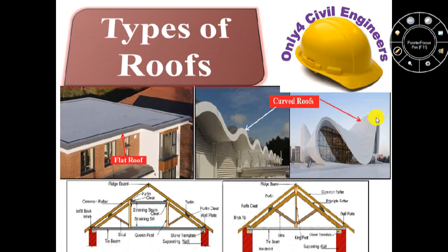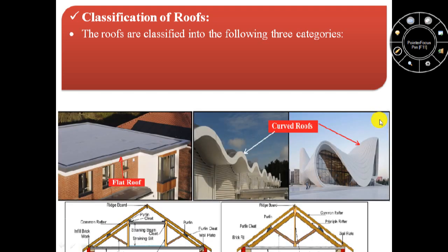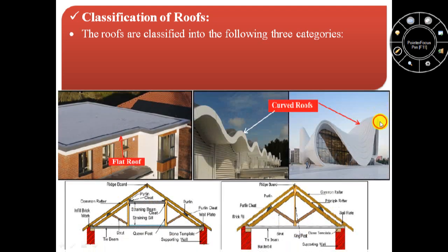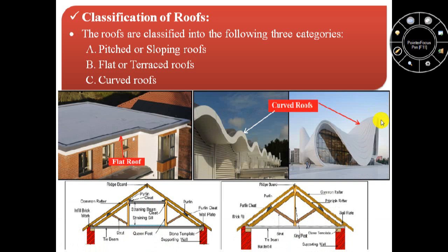Hello friends, thanks for clicking and welcome to my channel only for civil engineers. In this video we will discuss about types of roofs. If you want an ebook related to the subject building construction and materials with pictorial format like this presentation, then the link is given in the description box. So firstly we will see different types of roofs, that is classification of roofs. These roofs are classified into three main categories: pitch or sloping roofs, flat or terrace roof, and curved roof.